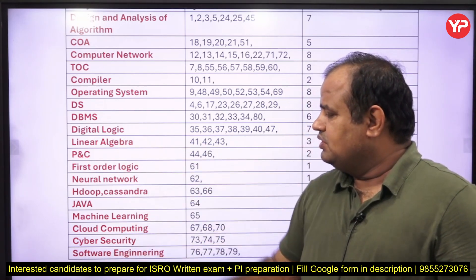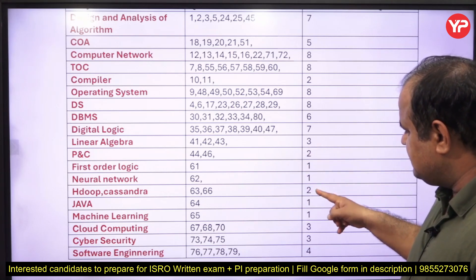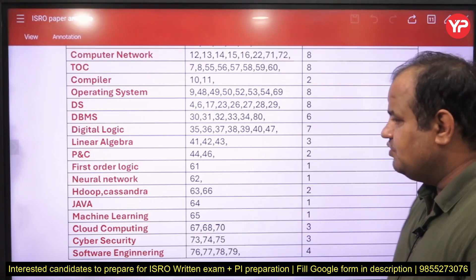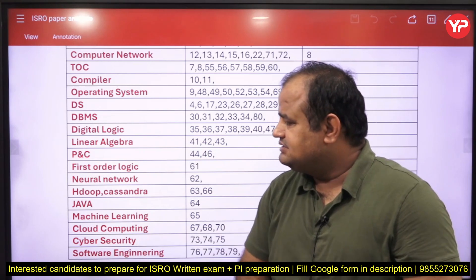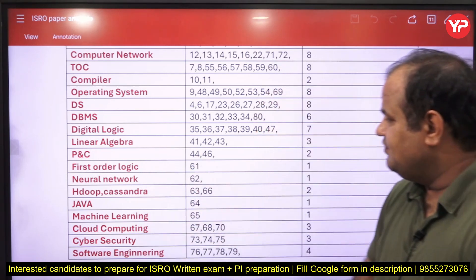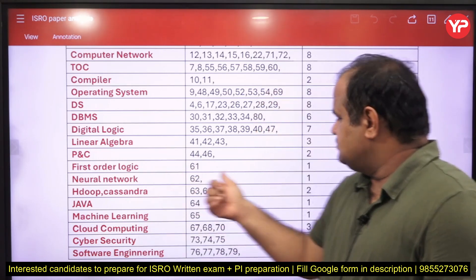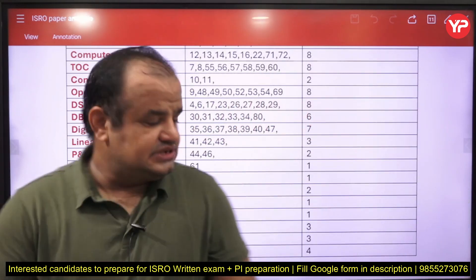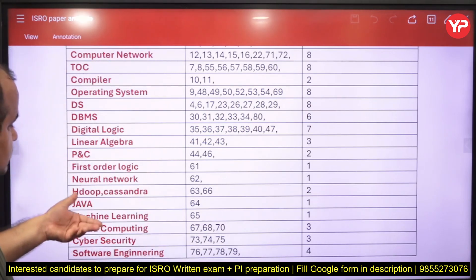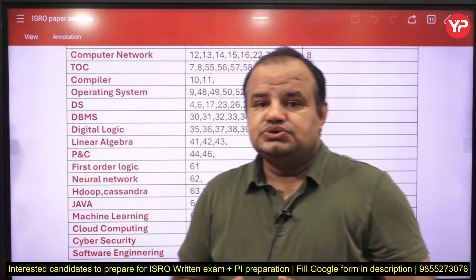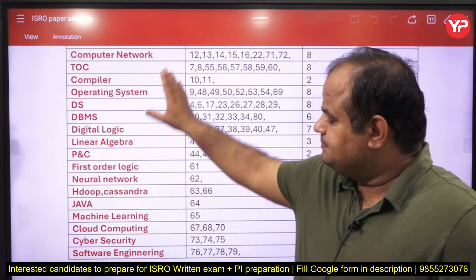If I count — 3, 5, 6, 7, 9, 10, 11, 13, 17 — almost 20 questions come from linear algebra, PnC, first order logic, neural network, Hadoop, Java, machine learning, security and software engineering. Last time there were two questions from PnC, two from first order logic, one from neural network, one from Hadoop and Cassandra. My dear students, you cannot skip these topics because if you skip 20 questions out of 80, there is very little chance of getting a call from ISRO.